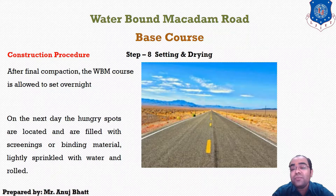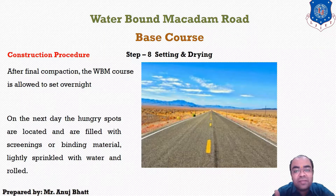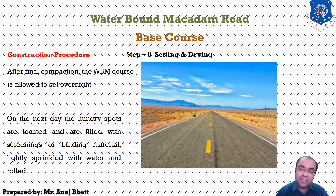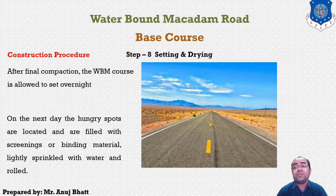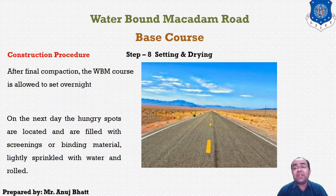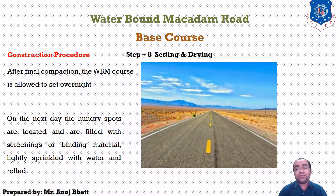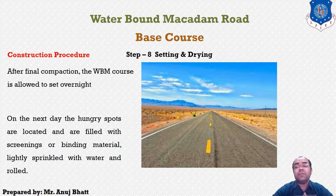For a 10 meter square area, the coarse aggregate that we are using has a volume of 0.9 to 1.07 meter cube. The screening material is 0.18 to 0.21 meter cube, and the binding material for the base course is 0.06 to 0.09 meter cube.